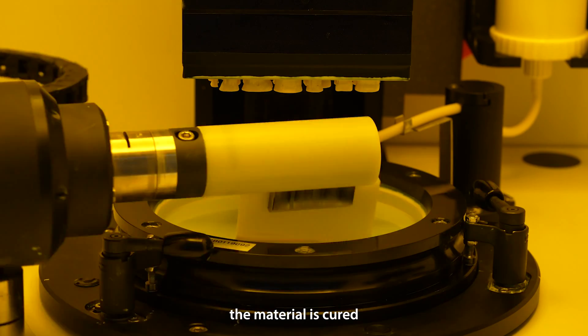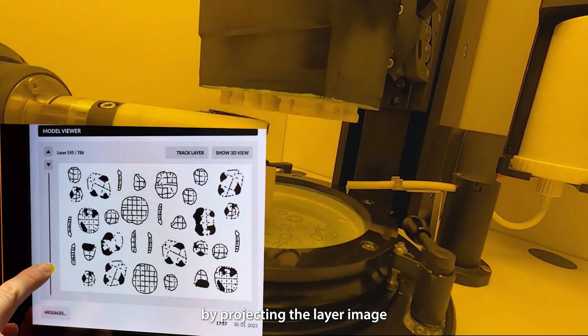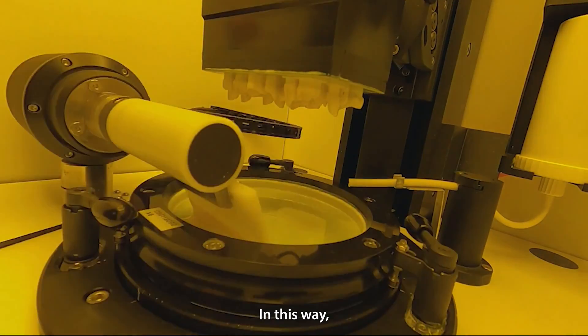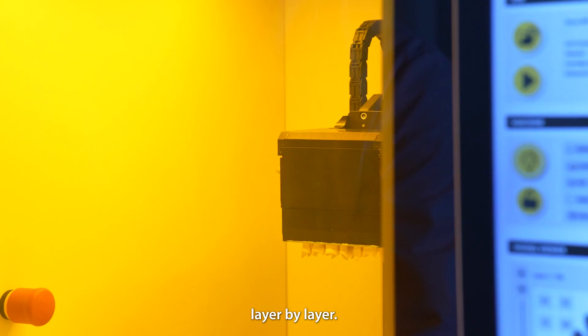To print, the material is cured by projecting the layer image through the transparent vat and onto the layer of slurry. In this way the green body is built up layer by layer.